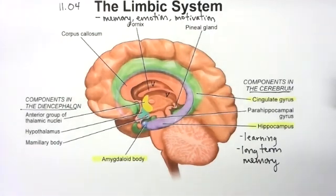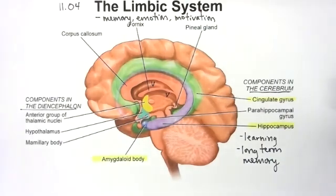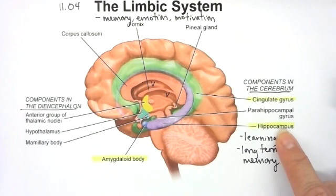If you've ever seen the movie 50 First Dates with Adam Sandler, at the beginning of every day she starts that day over — she can't form long-term memories. That's actually what happens if you have damage to the hippocampus. The memories formed before the damage remain, so he could remember everything before the day of his surgery. But after that, it didn't matter what happened to him or who he met — even if he'd seen them every day for 30 years, it was like he met them for the first time, because you need that hippocampus for long-term memories.